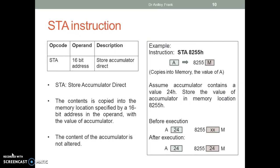STA: store accumulator direct. The content is copied into the memory location specified by a 16-bit address in the operand with the value of the accumulator. The content of the accumulator is not altered. For example, instruction STA 8255 copies the value of A to memory location 8255. Assume accumulator contains value 24. Before execution, memory location 8255 contains an arbitrary value. After execution, the value 24 from the accumulator is copied to the memory location.